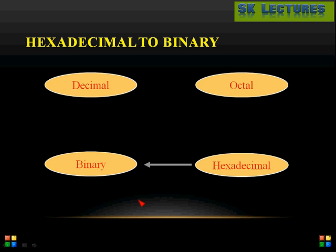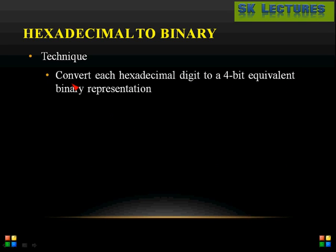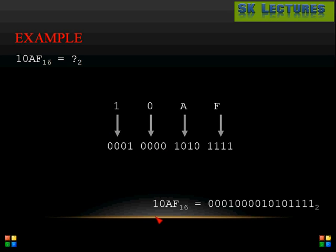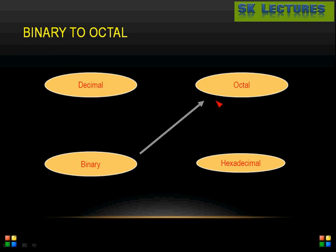For hexadecimal to binary conversion, each hexadecimal digit is expressed as a 4-bit binary equivalent, since the maximum digit F requires 4 bits. For example, 10AF base 16: F becomes 1111, A becomes 1010, 0 becomes 0000, and 1 becomes 0001, giving the full binary result.